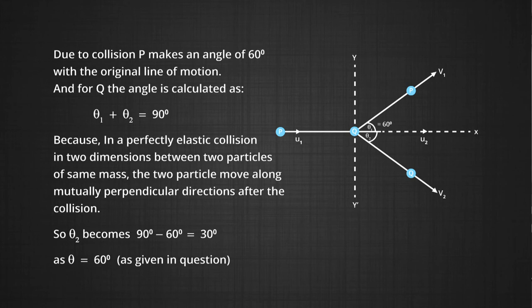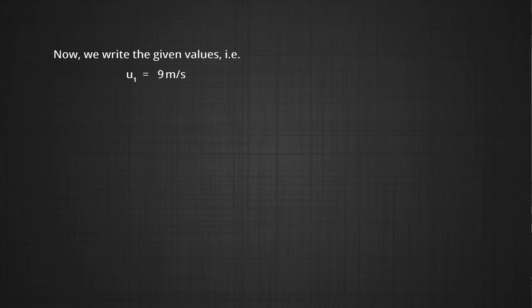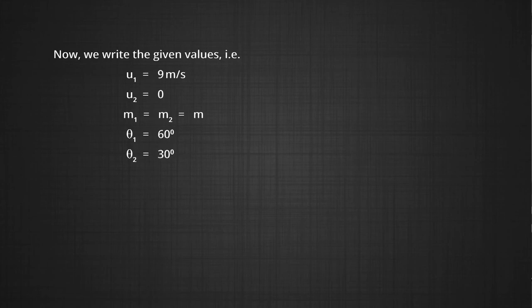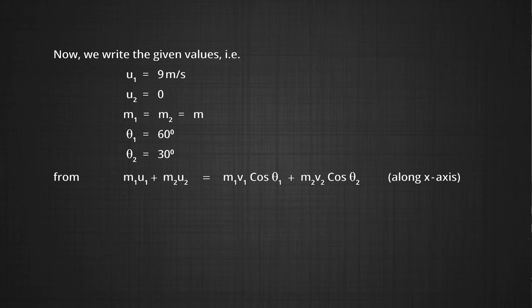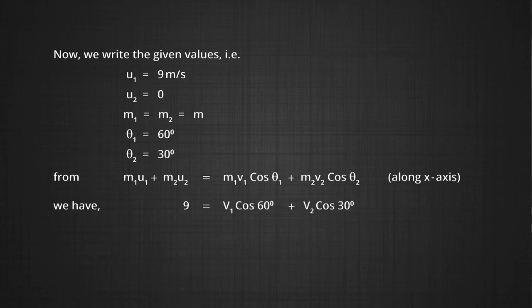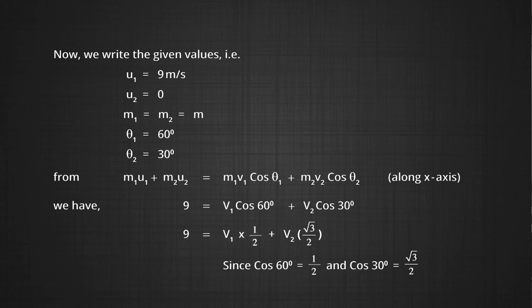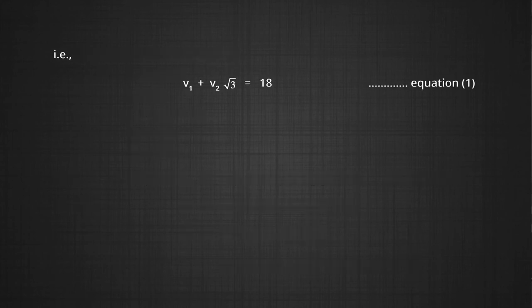Given values: U1 = 9 m/s, U2 = 0, M1 = M2 = M, theta₁ = 60°, theta₂ = 30°. From M1·U1 + M2·U2 = M1·V1·cos θ₁ + M2·V2·cos θ₂, we get 9 = V1·cos 60° + V2·cos 30° = V1·(1/2) + V2·(√3/2). Therefore V1 + V2·√3 = 18. Let this be Equation 1.